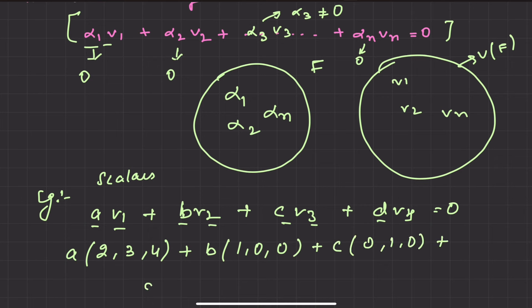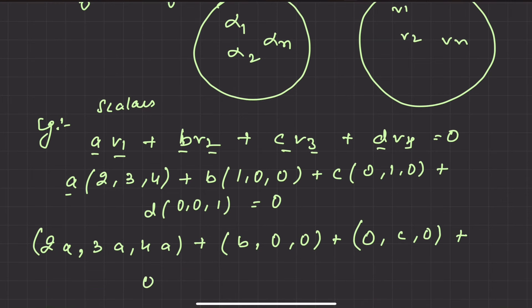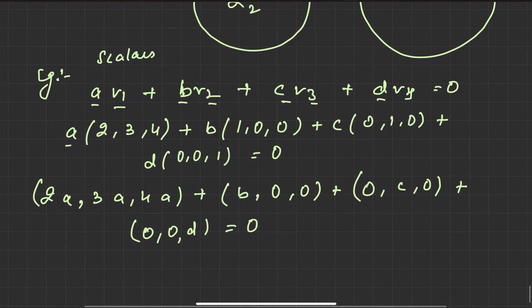And d v4 is (0,0,1), equal to 0. Multiply this bracket: 2a, 3a, and 4a. Similarly here, b, 0, 0. Then 0, c, 0. And last will be 0, 0, d. This whole thing will be equal to 0.